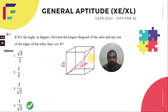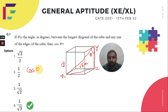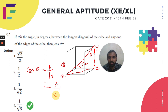We will consider the triangle X, Y, and Z. We have to find the value of cos theta, and this angle will be our theta. We know that cos theta equals base divided by hypotenuse. The base will be A, one of the edges of the cube, and the hypotenuse — that is the longest diagonal — will be root 3A. The A cancels out and the value of cos theta will be 1 by root 3. So option 4 is the correct answer.